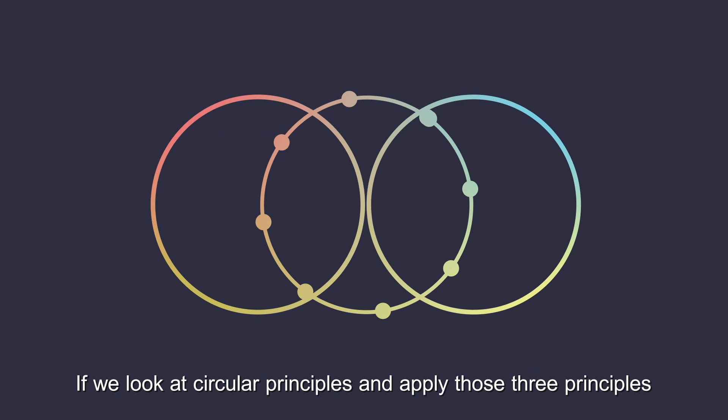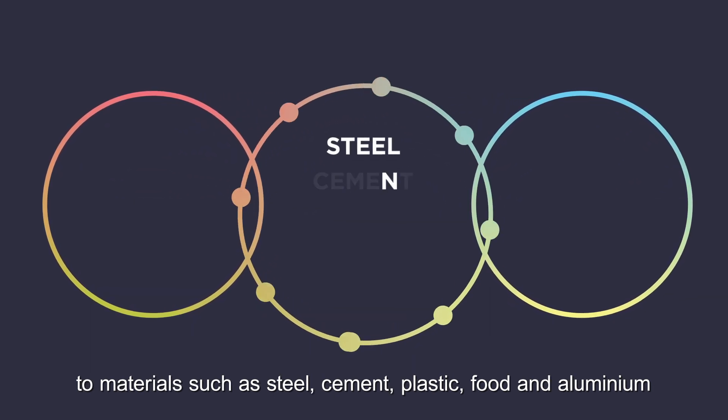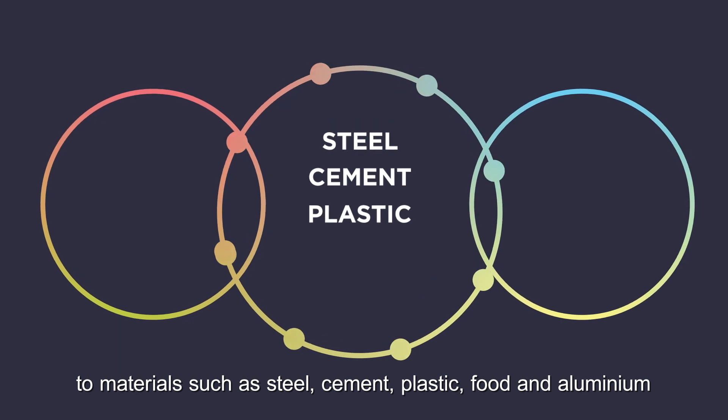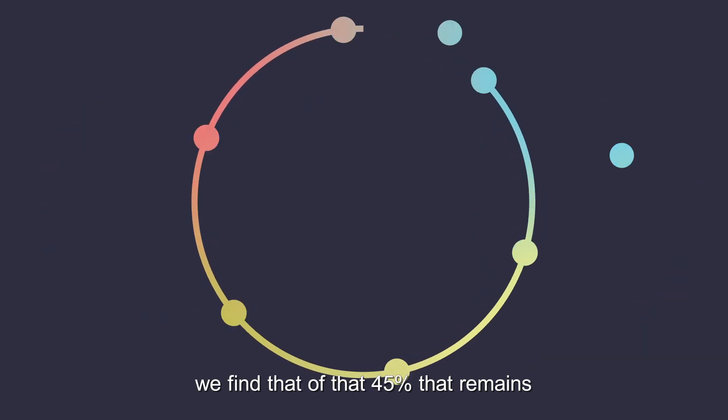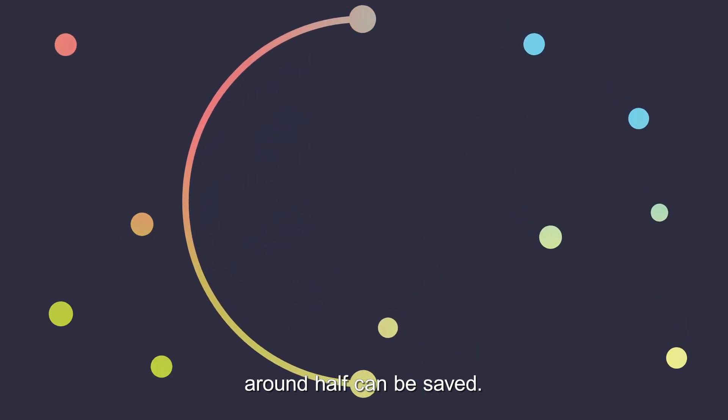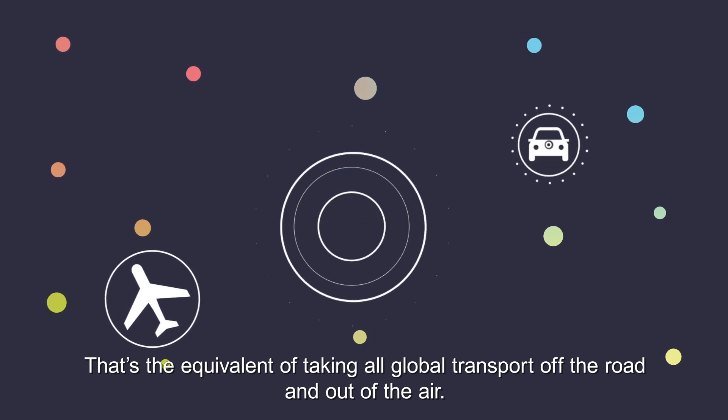If we look at circular principles and apply those three principles to materials such as steel, cement, plastic, food and aluminium, we find that of that 45% that remains, around half can be saved. That's the equivalent of taking all global transport off the road and out of the air.